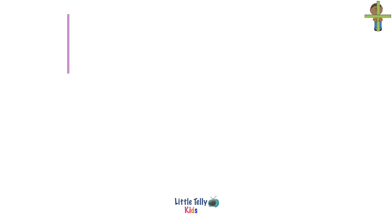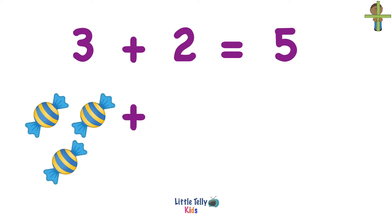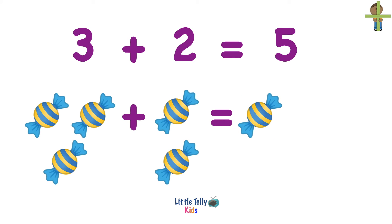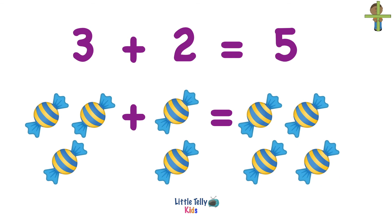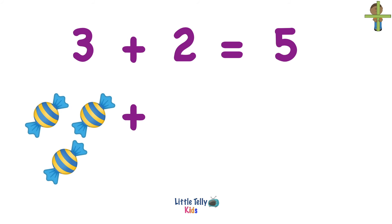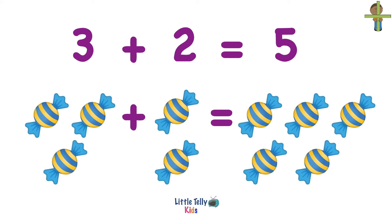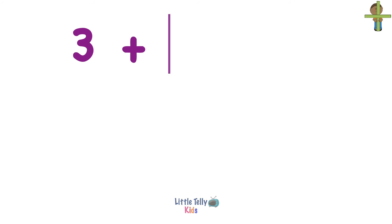Now let's solve another addition problem. 3 plus 2 equals 5. Let's try to understand with the help of an example. So 3 candies plus 2 candies equals 1, 2, 3, 4, 5. 5 candies. Let's look at it once again. There are 3 candies plus 2 more candies. 3 and 2 equals 5 candies.